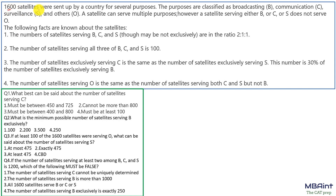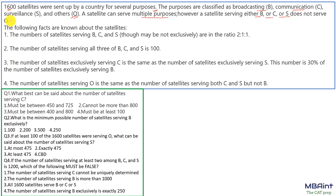1600 satellites were sent up by a country for several purposes. The purposes were classified as Broadcasting (B), Communication (C), Surveillance (S), and Others (O). The satellites can serve multiple purposes. However, satellites serving either B, C, or S do not serve O. So any satellite serving O will not overlap with the other purposes — O is always exclusive.